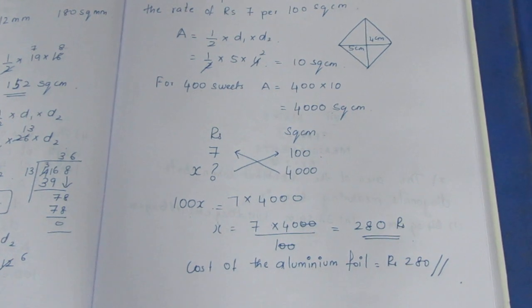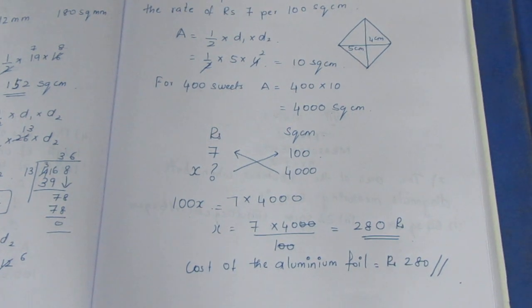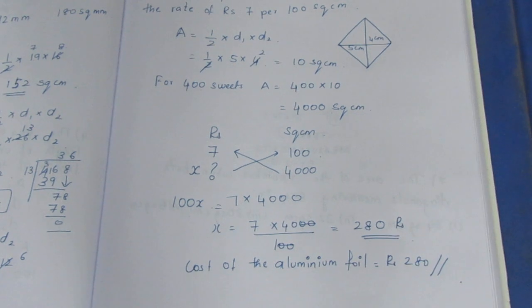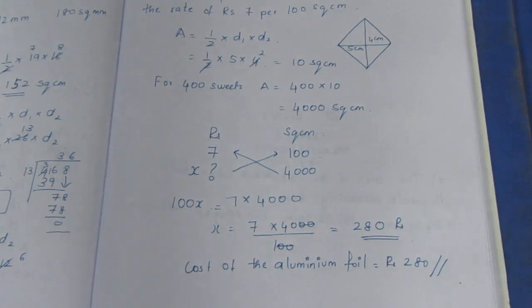For the 400 suites, the total cost is equal to ₹280. That is the answer. Thank you.